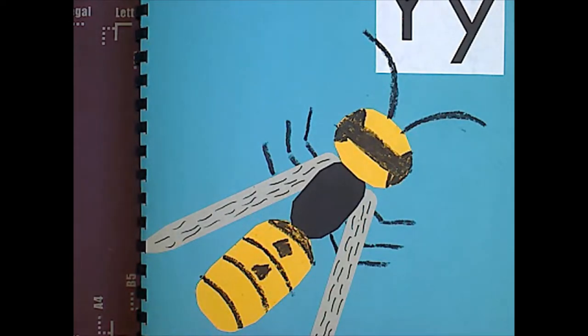Okay, kindergarteners, today we have the letter Y, and the animal is an insect, a yellow jacket, which is kind of like a wasp and kind of like a bee. You don't want to run into these guys.